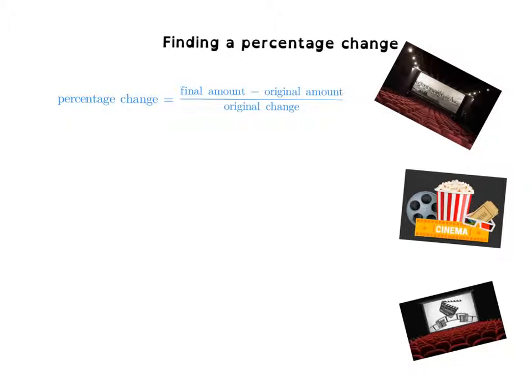A few years ago the prices of cinema changed — you can see pictures of cinema on the side. I love going to the cinema, and a few years ago the price of a ticket for an adult was approximately $18. One cinema decided to change the price and it dropped down to $10, which was great because I could go more often. There has clearly been a change.